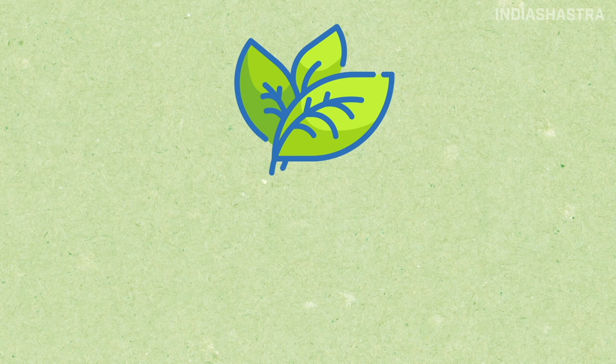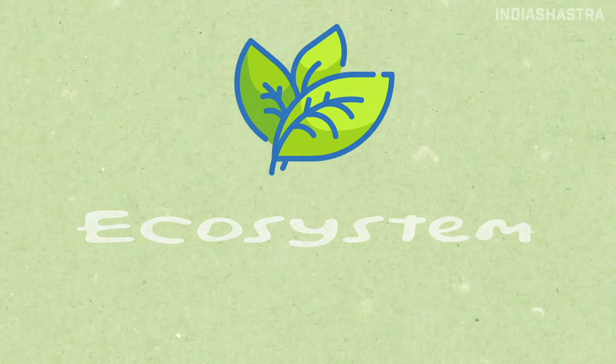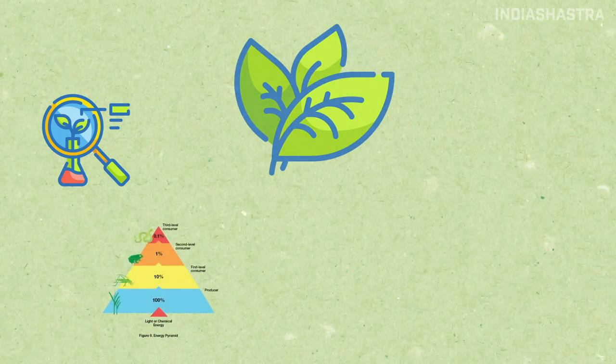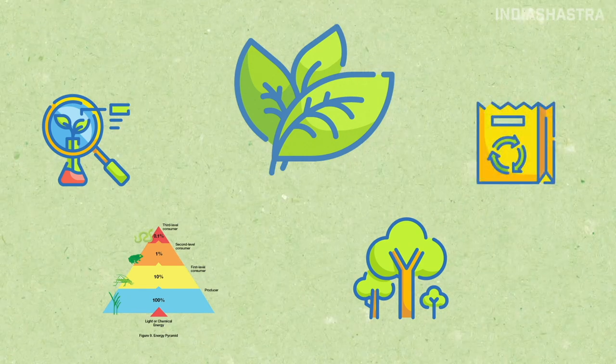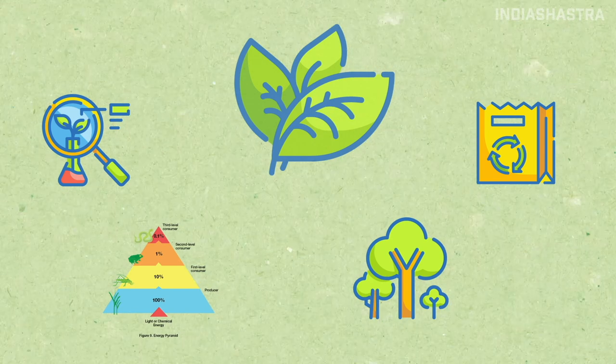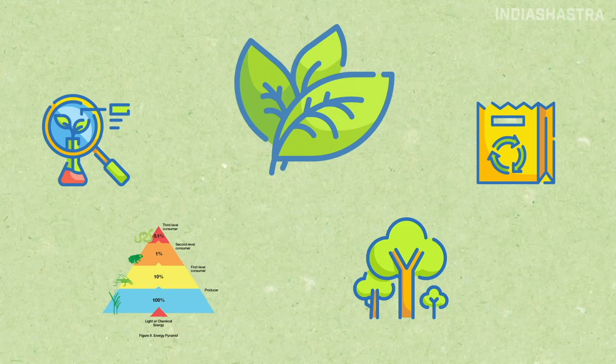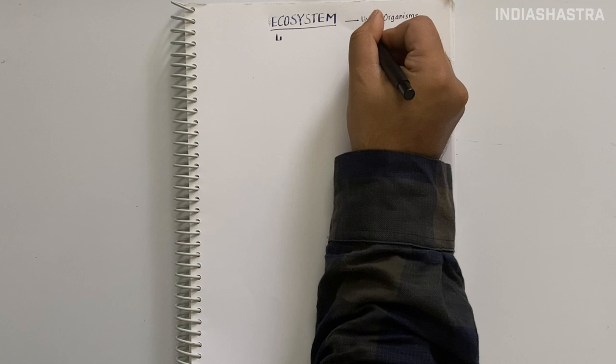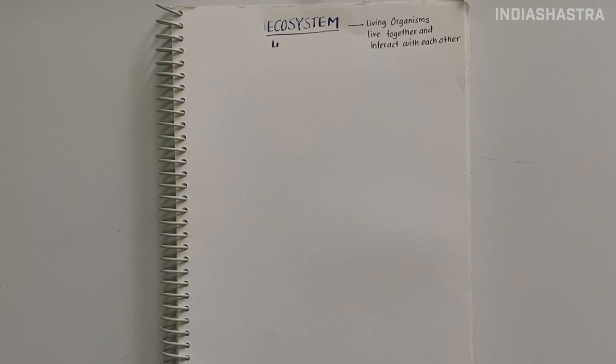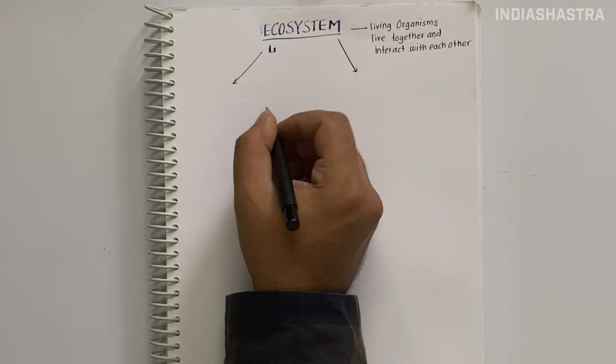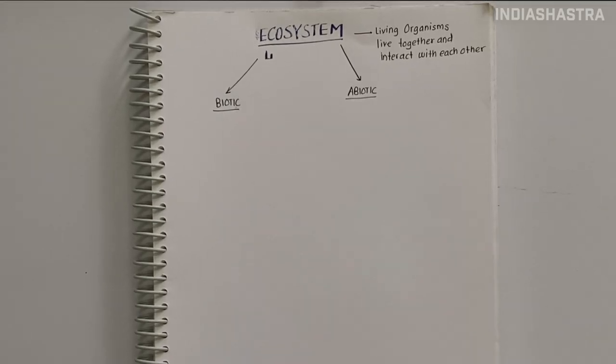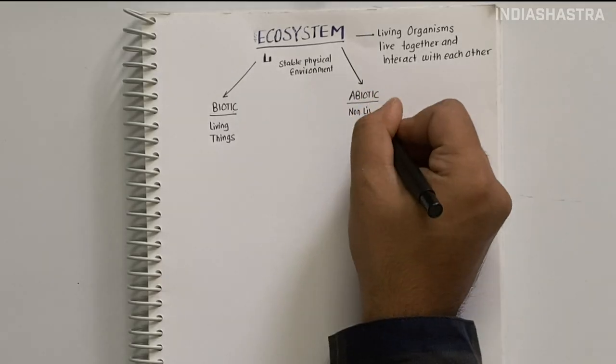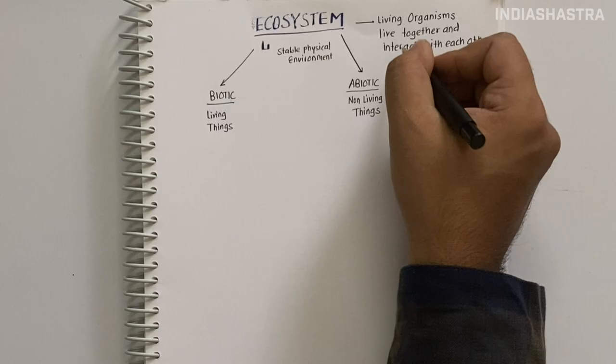In this video, we discuss the second chapter Environment and Ecology: Ecosystem. We'll brush up definitions that can be potential exam questions, then discuss Energy Pyramids, Ecological Succession, and finally Nutrient Cycles - Carbon Cycle and Phosphorus Cycle. Take your pen and paper and follow along. An ecosystem is where living organisms live together and interact with each other.